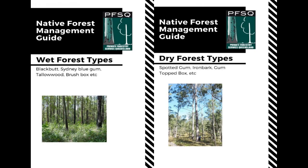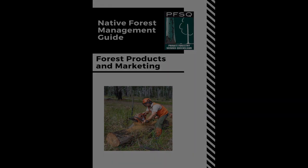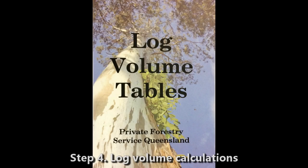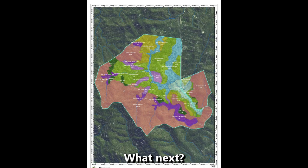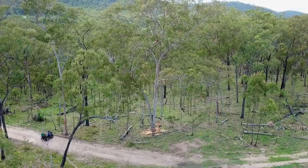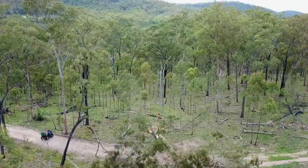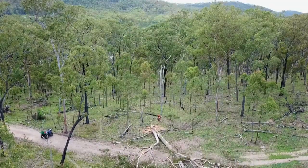Crown health is described in the native forest management guides for wet and dry forest types, and forest products are outlined with specifications in the forest products and marketing guide. Once stem diameter and product length is determined, log volume can be calculated using log volume tables. Apply this data to individual map units to quantify forest products and volumes. The data will provide insight into a range of potential forest products, current harvestable volumes, retained future harvestable volumes, and numbers of stems to be treated. This information is useful for harvesting operation scheduling and average volumes of herbicide for thinning treatments.